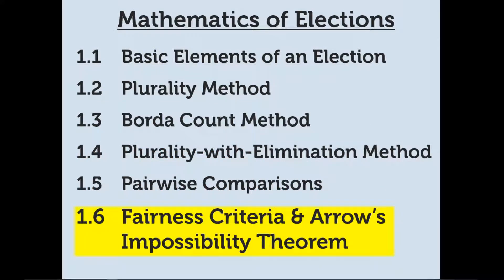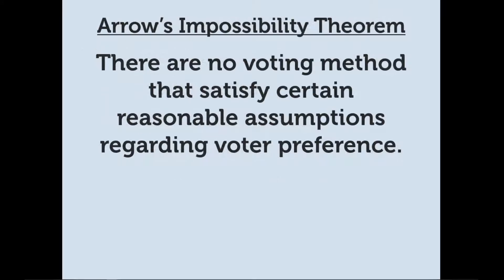In this video we're going to look at fairness criteria, which examines what makes an election fair, and we're also going to look at Arrow's impossibility theorem. Arrow's impossibility theorem says that there is no voting method that satisfies certain reasonable assumptions regarding voter preferences. We had already looked at voting methods, but in this video we're going to look at those reasonable assumptions and see whether the voting methods meet or violate them.